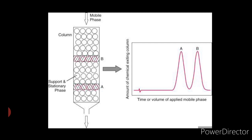The word chromatography is derived from two words: chroma, which means color, and graphine, which means to write. Chromatography is defined as the separation of substances according to their partition coefficient, that is their relative solubilities in two immiscible phases. The two immiscible phases are the stationary phase, which may be solid or liquid that is immobilized, and the mobile phase, which may be liquid or gas that flows over or through the stationary phase.